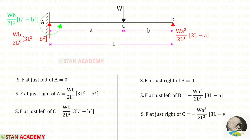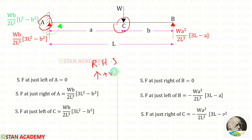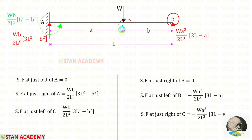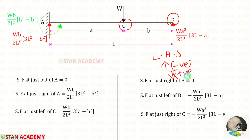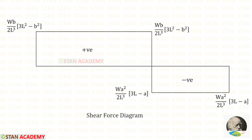Now we are going to draw the shear force diagram. From point A up to point C, we use the right-hand side rule: upwards is positive and downwards is negative. From point B up to point C, we use the left-hand side rule: upwards is negative and downwards is positive. So we can easily find the shear force values. Here you can see the shear force diagram.